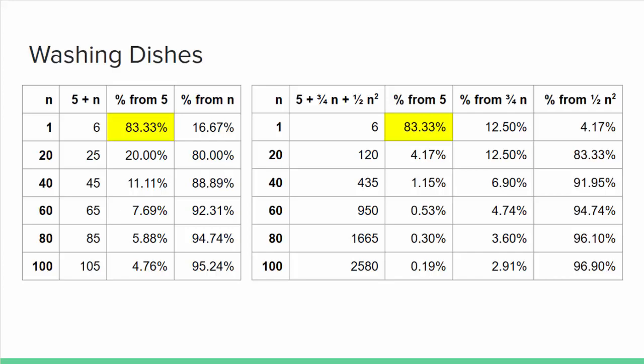Let's look at how the factors in each growth function contribute to the total work as n grows. For both algorithms, the constant factor 5 represents 83% of the total work to wash a single dish, but as n increases, the 5 represents less and less of the total until it finally has a negligible impact.